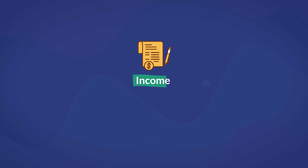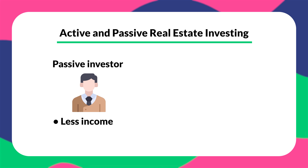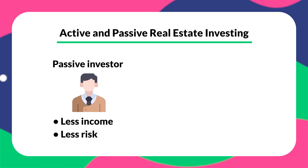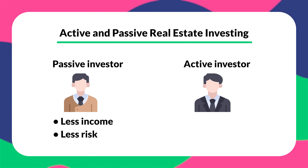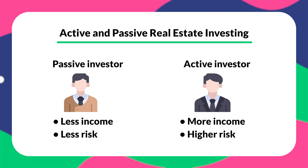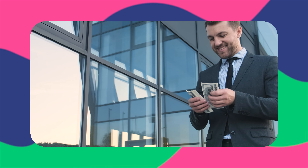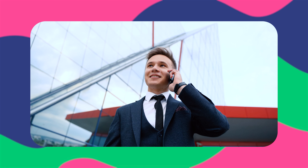For some people, the deciding factor between these two strategies is income. When determining income, it's vital to also consider the risk involved and the time committed. A passive investor may make a fraction of what an active investor makes in a year, but they don't carry as much risk. Active real estate investors acquire their own income-producing real estate and keep all the profits, which can net them anywhere from a few thousand to a few million dollars a year. Passive investors can reach similar amounts simply by waiting long enough without risking their greatest asset — their money.